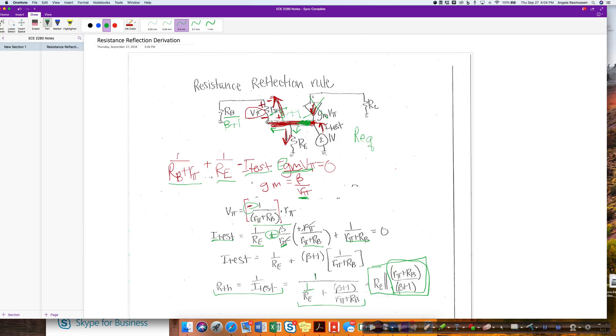So that's where I get that r equivalent at the emitter side here would be re in parallel with that rb plus rpi over beta plus 1.